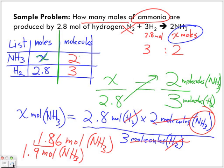So what we had was a ratio of three to two of hydrogen to ammonia. But if we're given 2.8 moles of hydrogen, we have to figure out in terms of moles how many moles do we have, and we use this ratio.